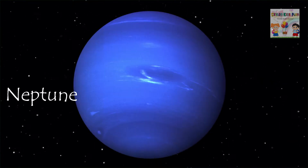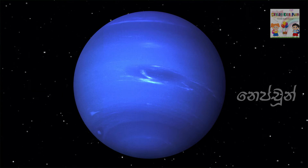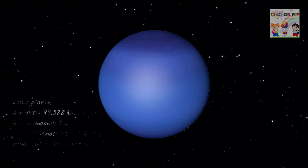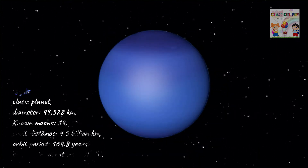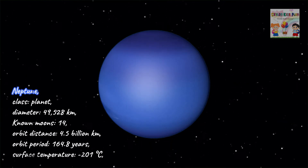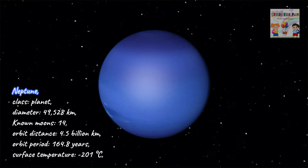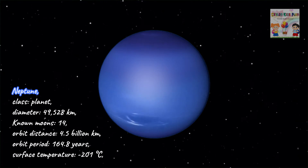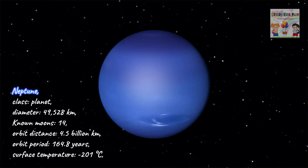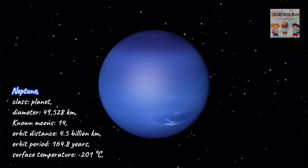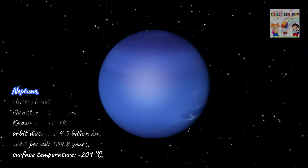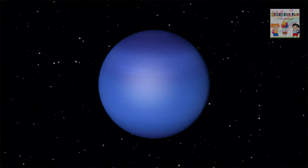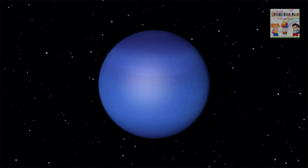Neptune! Neptune, class: planet. Diameter: 49,528 kilometers. Known moons: 14. Orbit distance: 4.5 billion kilometers. Orbit period: 164.8 years. Surface temperature: minus 201 degrees Celsius.